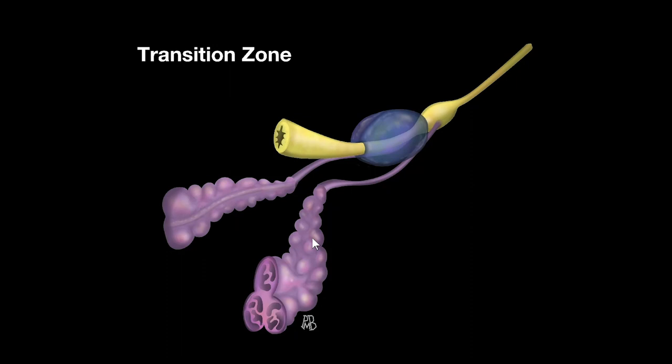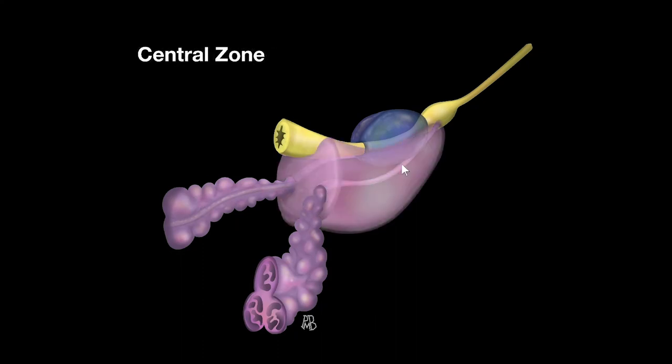The transitional zone and one that's located more posterior and superior, the central zone. The central zone can be pretty big, varies in size, and both of these will increase in size with advancing age. They can get so big that they push out on the remainder of the anatomy of the gland and in some ways obscure the peripheral aspect of the gland.